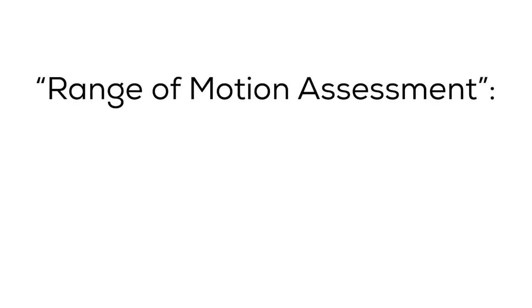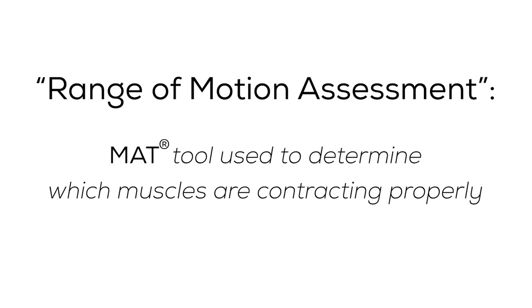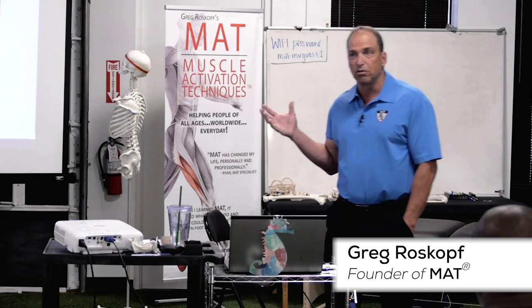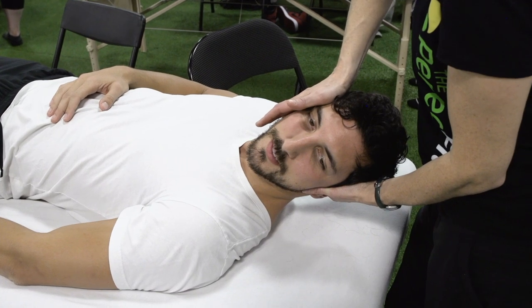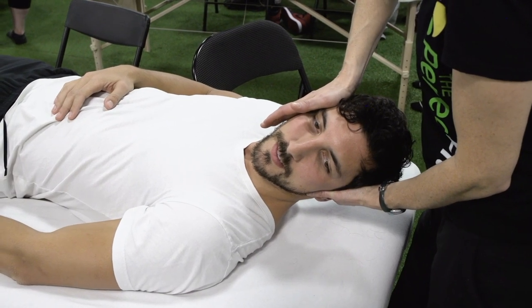The range of motion assessment is the most important tool you have as an MAT practitioner, because it tells you what you can't do. For example, if you can't rotate your head to the right, that means the muscles that rotate your head to the right aren't contracting effectively. So we look at the muscles that create right cervical and capital rotation, test and treat the ones that can't do it, and all of a sudden — you can rotate your head to the right.